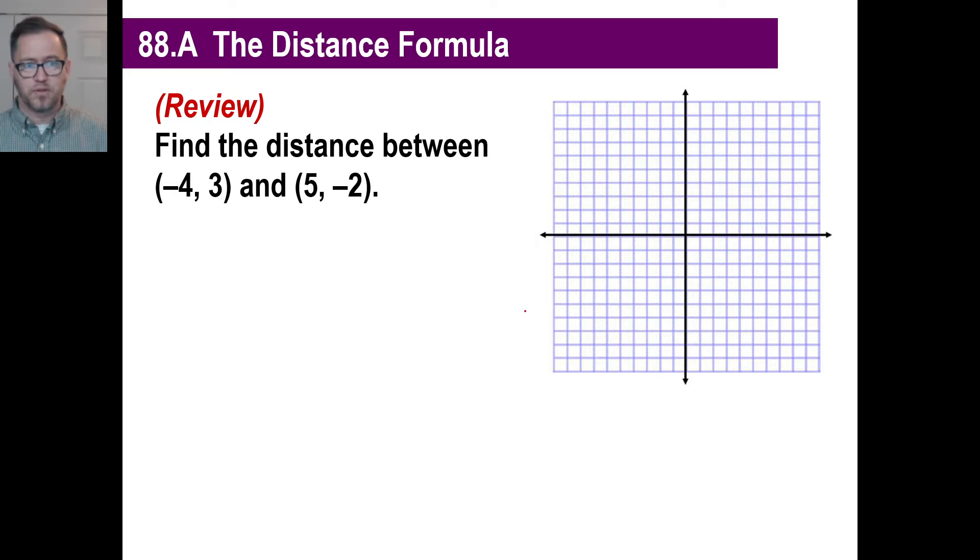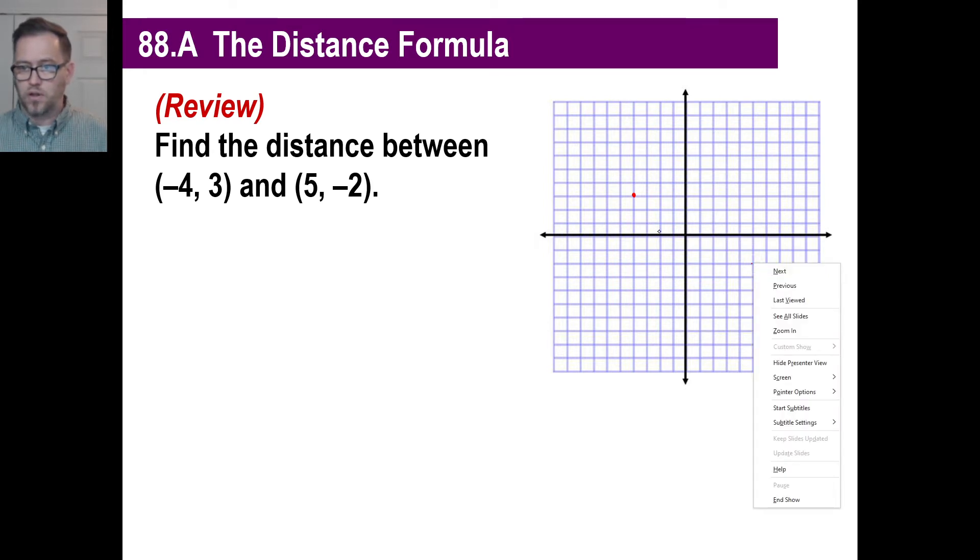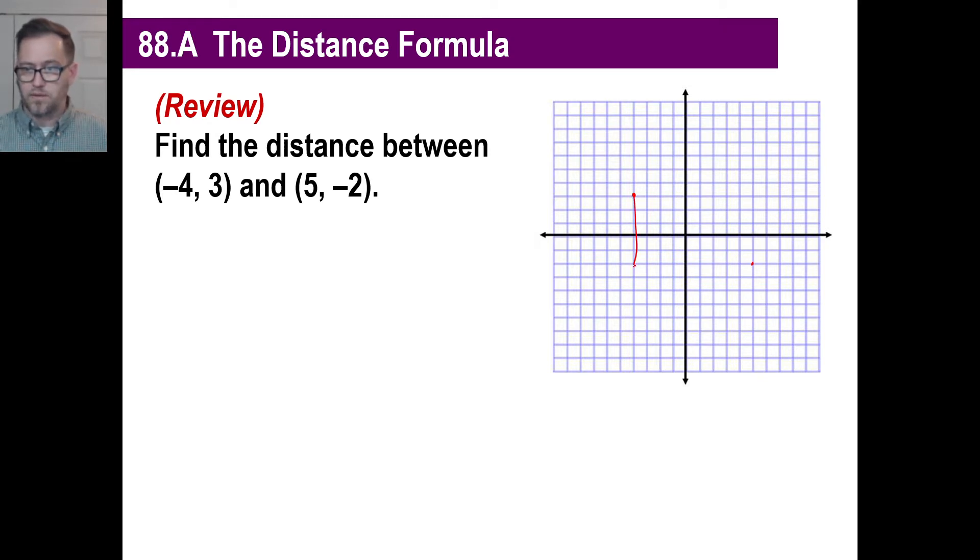Let's go back and look at the distance between two points. Let's say it's (-4, 3). We'll go one, two, three, four, and then one, two, three. There's one point. And (5, -2). So one, two, three, four, five, and then -2 is right here. If you recall, the way we've done this before is we've just taken this and drawn a right triangle. In other words, the distance is the hypotenuse of the right triangle.